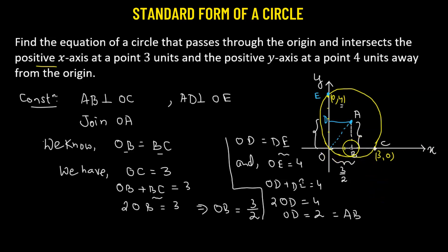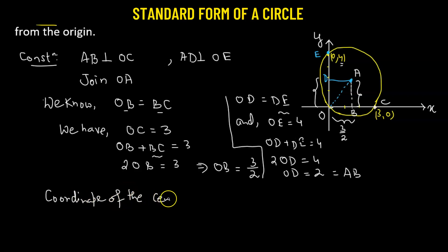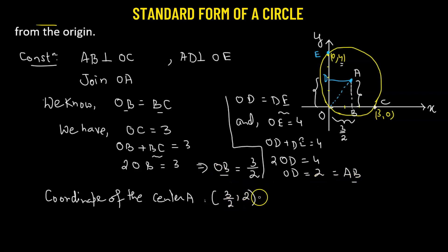Now that we have OB, which is the x-coordinate of center A, and AB, which is the y-coordinate of center A, we can define the coordinate of our center A. The x-coordinate is OB = 3/2, and the y-coordinate is AB = 2. So the coordinate of center A is (3/2, 2).